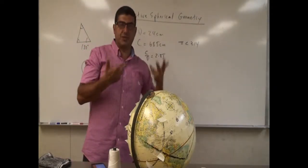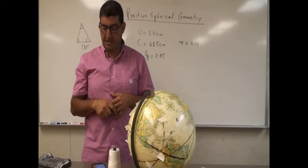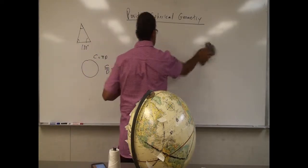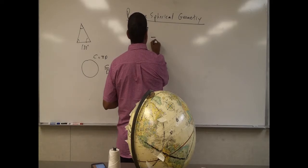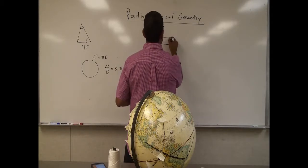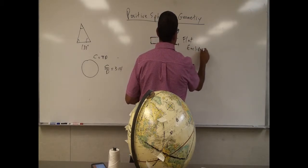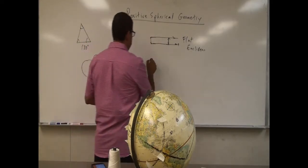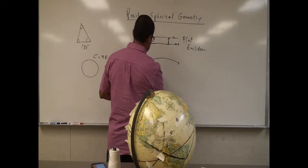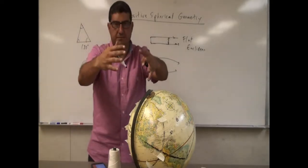In a negatively curved universe, the opposite would be true. Another property I'm going to show is that parallel lines do not stay parallel in a positively curved universe. In a flat universe, parallel lines stay equidistant. But in a positively curved geometry, lines will start a certain distance apart, curve outward, and then converge back inward — we say they're converging toward each other.